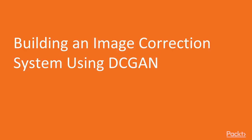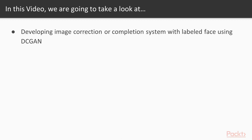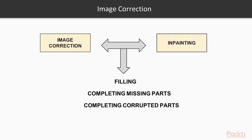Now we move on to the first video of this section that deals with building an image correction system using DCGAN. In this video, we are going to develop an image correction or completion system with the Labeled Faces in the Wild (LFW) dataset using DCGAN. Image correction and in-painting are related technologies used for filling in or completing missing or corrupted parts of images.